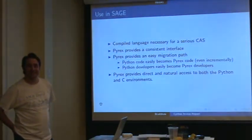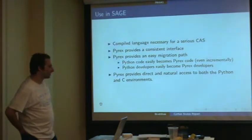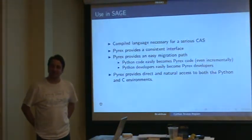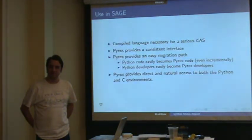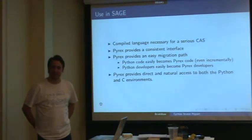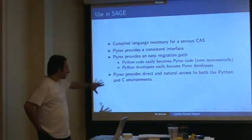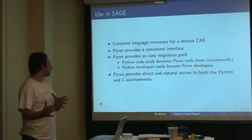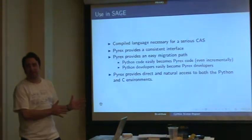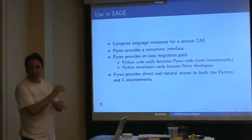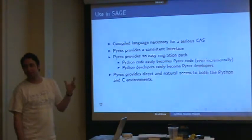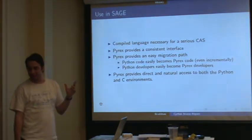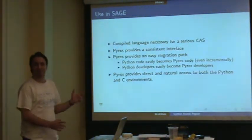That's a major problem with Magma development in my experience — I couldn't learn in the time I had in Sydney how to write fast code in Magma that uses the C level. In any case, we don't have that barrier with Cython, and porting code from Python to Pyrex is excellent. If you had to rewrite in C++, you'd introduce another set of bugs and then have to debug them in C++.